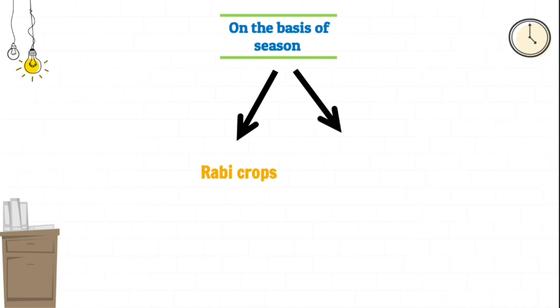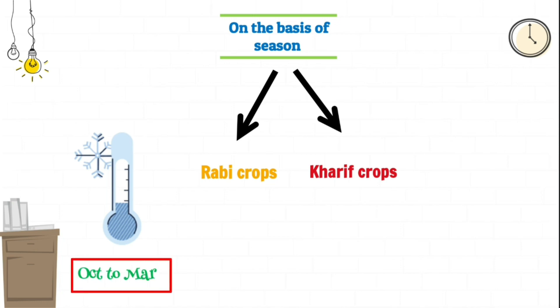Rabi crops are generally grown in winter season. The winter season in India is from October to March. Examples are wheat, gram and peas.